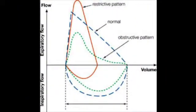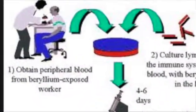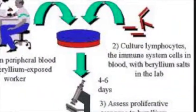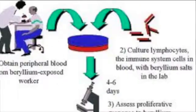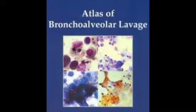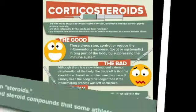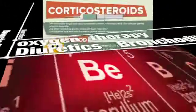Possible pulmonary function test findings include lower forced vital capacity and diffusion capacity for carbon monoxide, and a restrictive, obstructive, or mixed pattern may be observed. Once you suspect chronic beryllium disease, the next step is to perform a beryllium lymphocyte proliferation test. Two positive test results define sensitization. Patients with positive blood results typically undergo bronchoscopy, bronchial alveolar lavage, and transbronchial biopsy. Prednisone often stabilizes the disease and improves symptoms; the lowest dose of prednisone that prevents disease progression should be maintained. Adjuvant therapy includes bronchodilators, diuretics, and oxygen.